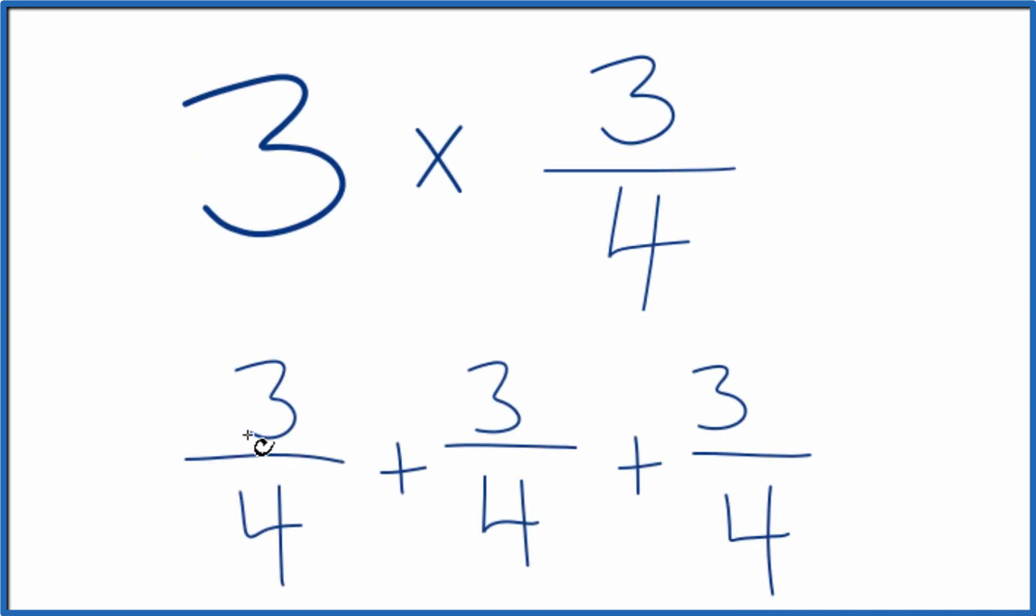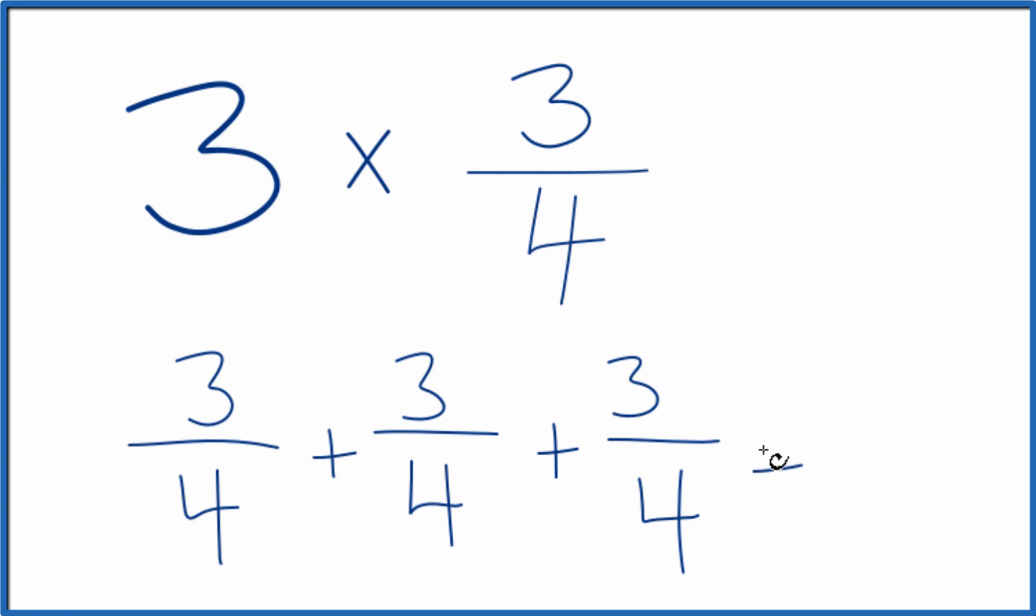And when we're adding fractions, if the denominators are the same, we just keep that the same here, add the numerators. 3 plus 3 plus 3 is 9. So 3 times 3 fourths, that equals 9 fourths.